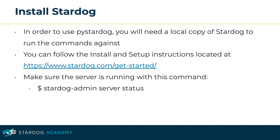In order to use PyStardog, you will need a local copy of Stardog to run the commands against. You can follow the install and setup instructions at the Stardog get-started page. You can always make sure the server is running with this command: stardog-admin server status.